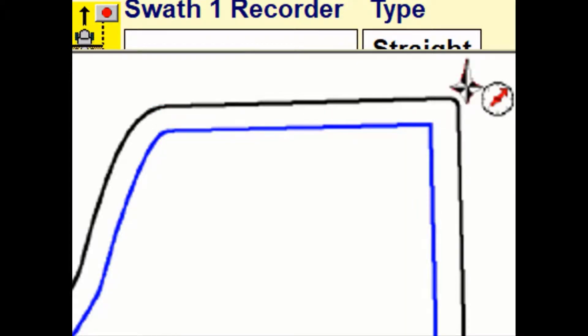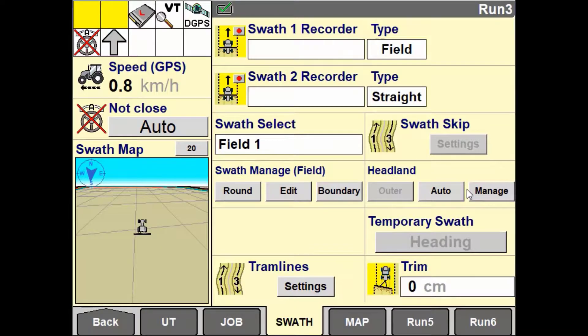If using auto guidance and the field swath is selected you will have the ability to choose the option auto or manual. Selecting auto mode will link the headland operations mode to the swath manager window. When interior is selected on the swath manager window the headland's operation mode automatically changes to inner.